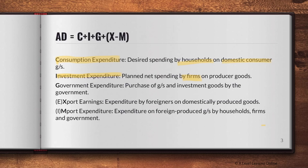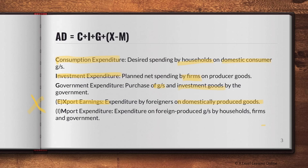Next is I — investment expenditure — the planned net spending by firms on producer goods. It's how much a firm invests into an economy to produce more goods, which in turn generates greater national income. Then G — government expenditure — the purchasing of goods and services, mainly merit goods, infrastructure, and investment goods by the government, to invest in the economy and help it grow. After that, X — exports — which are export earnings, basically expenditure by foreigners on domestically produced goods.